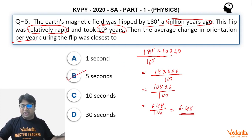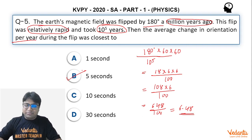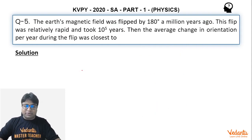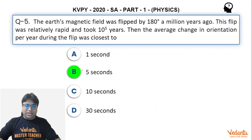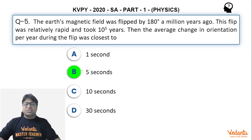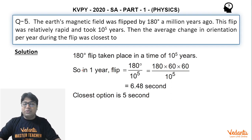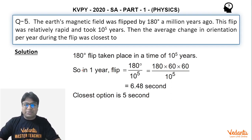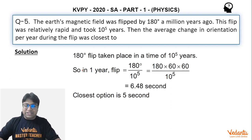So the answer is 6.48 arc-seconds per year, and the closest option from the given choices is Option B, which is the correct answer, as we can verify. I hope you liked and understood the solution — it was a straightforward question. See you in the next question, bye!